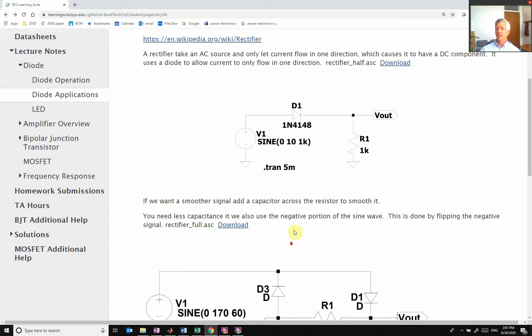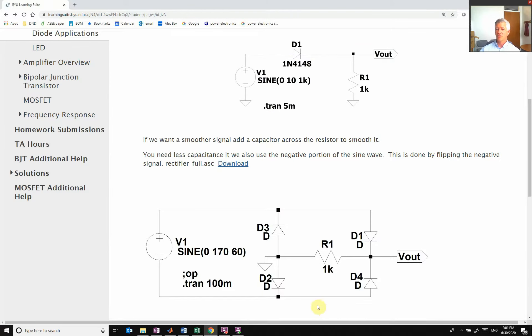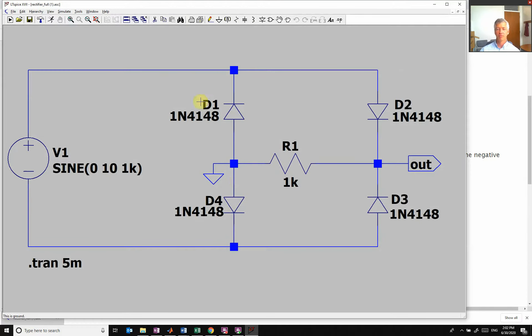Now if we want to make it a little bit less, we can go to what's called a full wave rectifier. So let's look at what this full wave rectifier looks like. In this case, let's simplify this down and do it a little bit at a time.